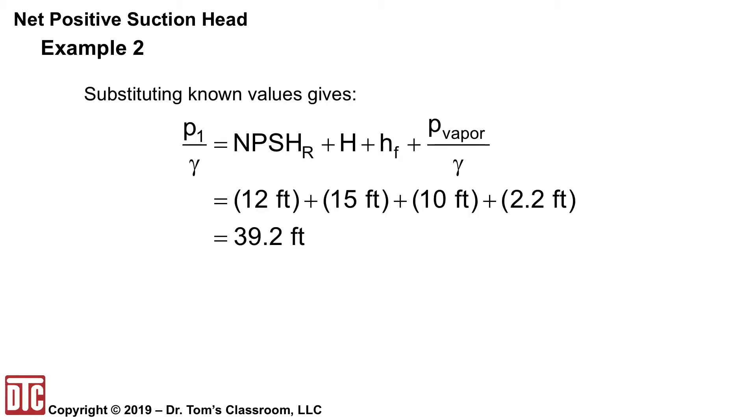So the required is 12 feet. The H that we've got to have is 15 feet. That's the lowest that we can make the suction side of the pump. The head loss 10 feet and then the vapor pressure. Add all those up and P over gamma, the pressure head has to be 39.2.